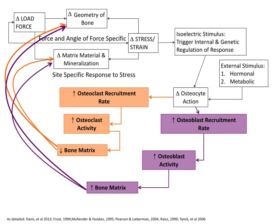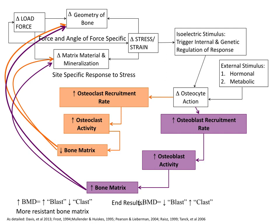In addition to these internal stimuli from the isoelectric changes, we have external stimuli due to changes in anabolic and catabolic hormone signals, as well as changes in metabolic signals triggering the bone to change its osteocyte action. The end result is a change in the matrix material, the amount of mineralization, and the geometry of the bone matrix itself, in an attempt to ensure that the load force remains below the yield point so that we have energy return within the bone matrix and the bone does not reach its failure point.